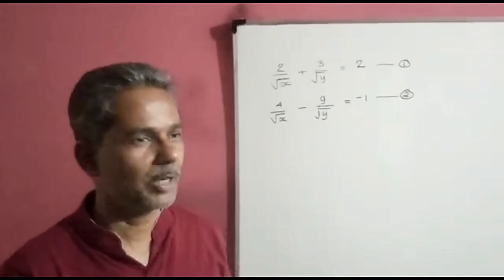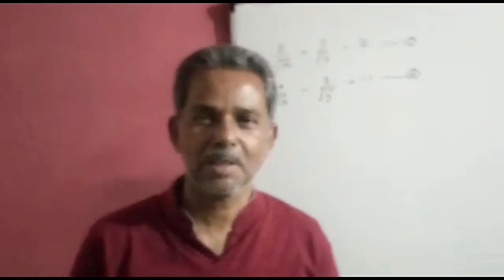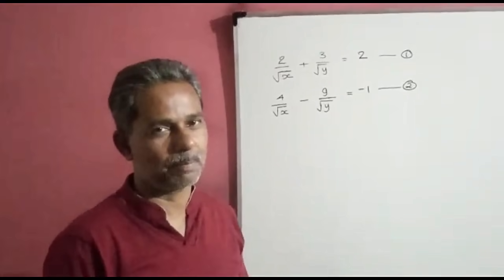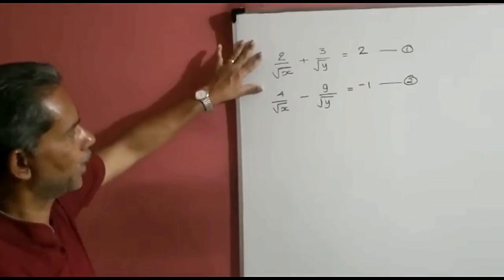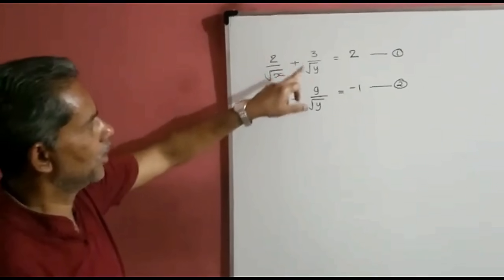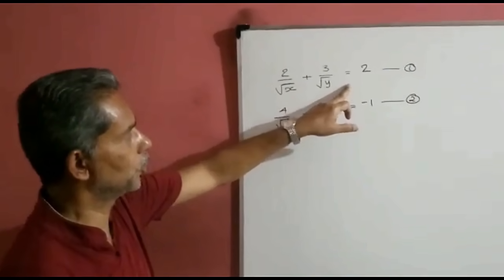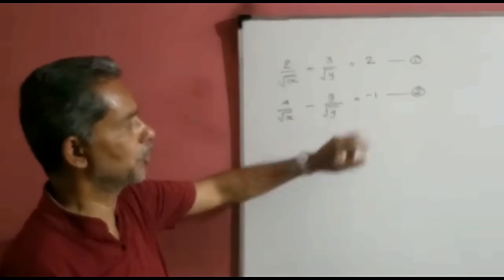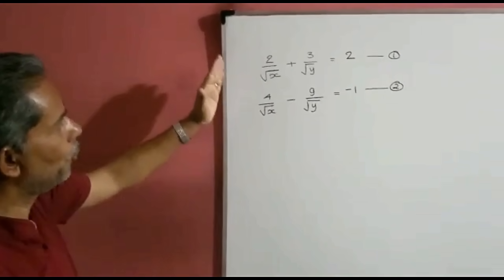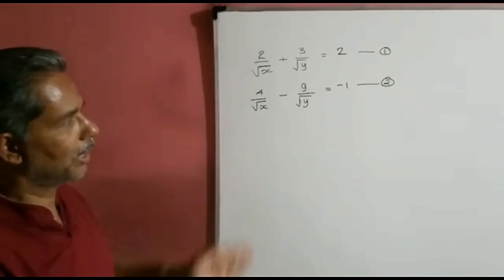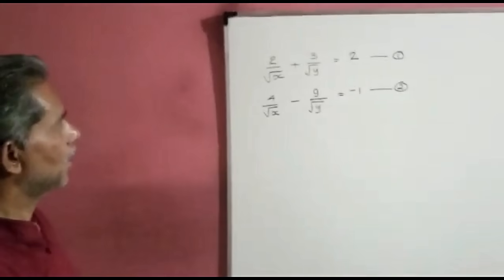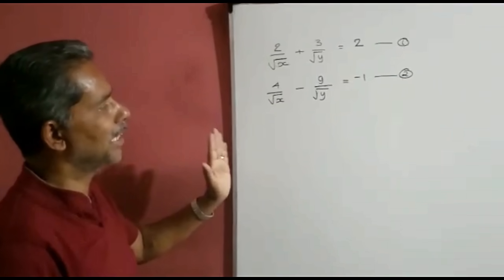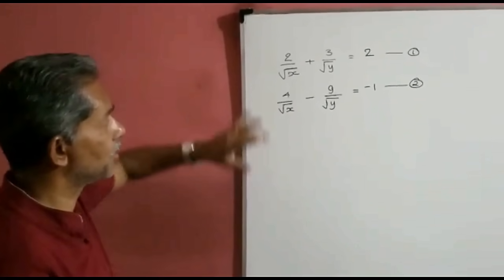Hello students. Today let us study equations that can be reducible to linear equations in two variables. Consider the equations: 2 upon root x plus 3 upon root y is equal to 2, and 4 upon root x minus 9 upon root y is equal to minus 1. Obviously they are not linear equations in two variables, but they can be reduced to a linear equation in two variables and can be solved.